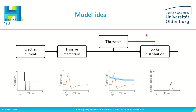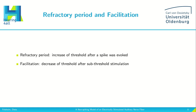We still need to look at how the threshold is changed after a pulse was presented. I want to look at two phenomena: one is the refractory period, which is the increase of the threshold after a spike was evoked. The other is facilitation, which is the decrease of the threshold after sub-threshold stimulation — so after no spike was evoked. You might notice a problem here, because spike or no spike is a discrete event, but here we only have the spike probability.